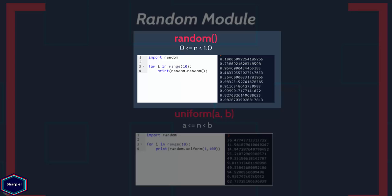In this example, I call the random() function in a for loop. If you look at the output, you will see the output is always between 0 and 1.